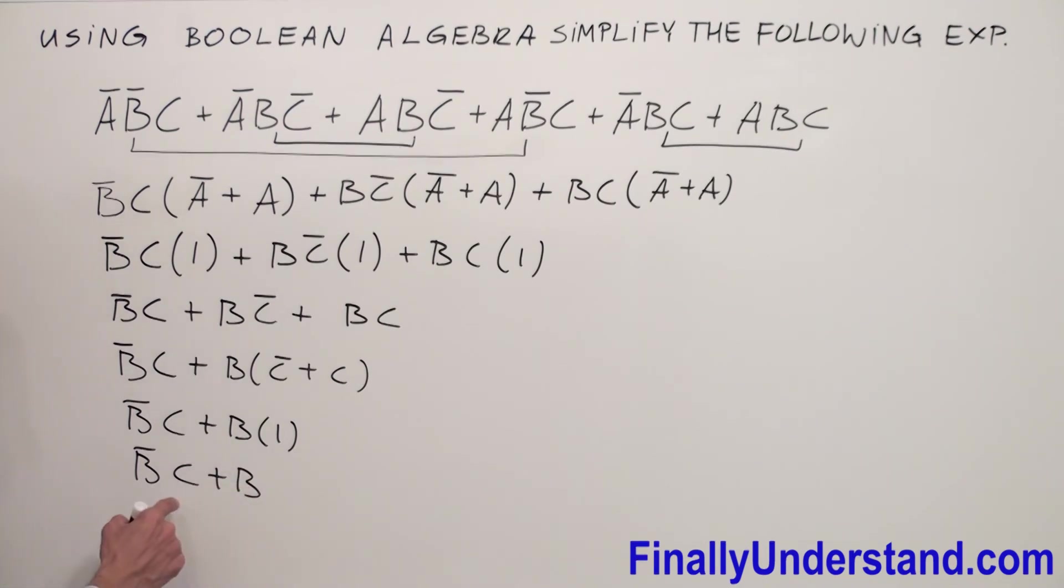And I'm going to apply the complement absorption theorem, which says that anytime I have complements but one of them is ANDed with something else, that complement is going to drop out. That's why I'm going to write my answer in this way: C or B. This is my solution.